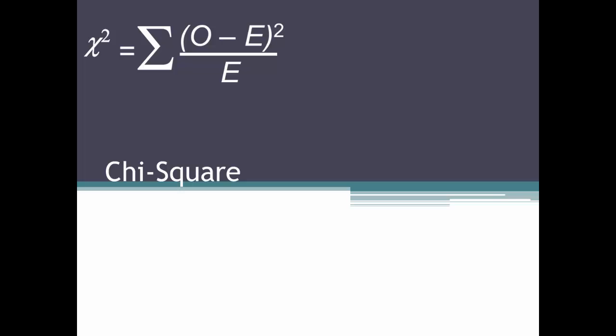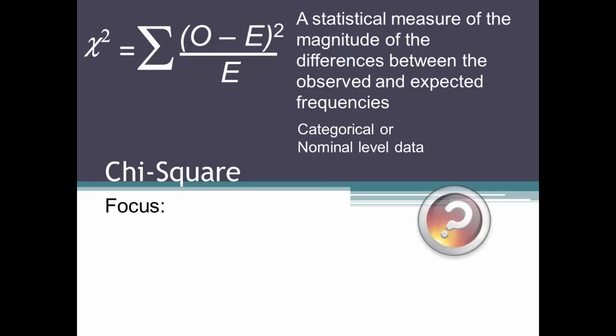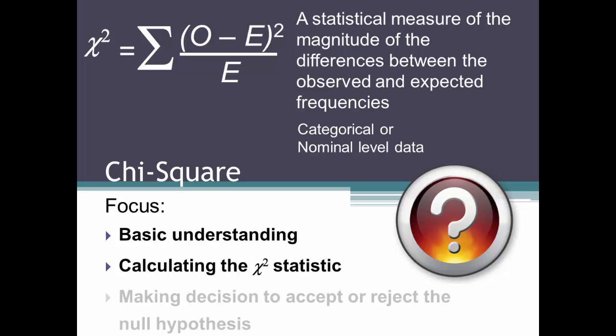So you have some data and you need to calculate chi-square, which can be defined as a statistical measure of the magnitude of the differences between the observed and expected frequencies. You use chi-square on nominal or categorical data. We will focus on a brief and basic understanding of chi-square, how to calculate the chi-square statistic, and how to use what you have calculated to determine if you should accept or reject the null hypothesis.